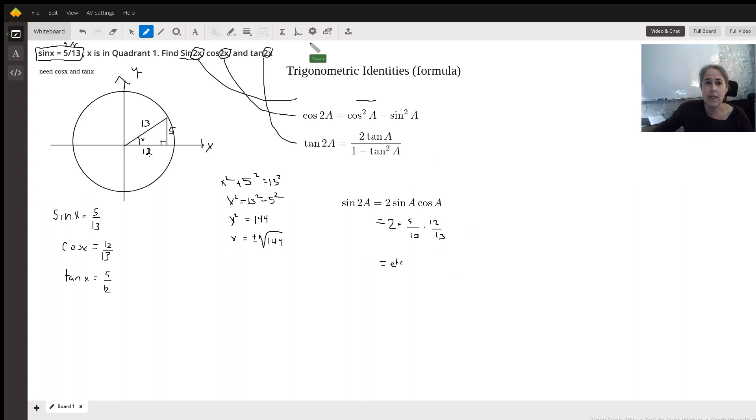And then you do the same thing for the cosine of 2a. Just going to go ahead and put in the cosine squared now. So 12 over 13 squared minus 5 over 13 squared. And again, you just simplify that.